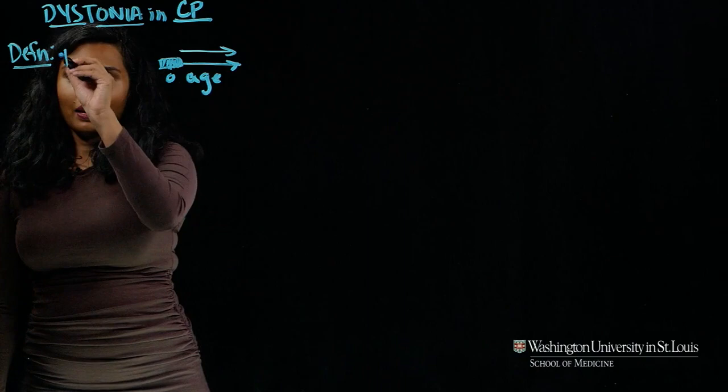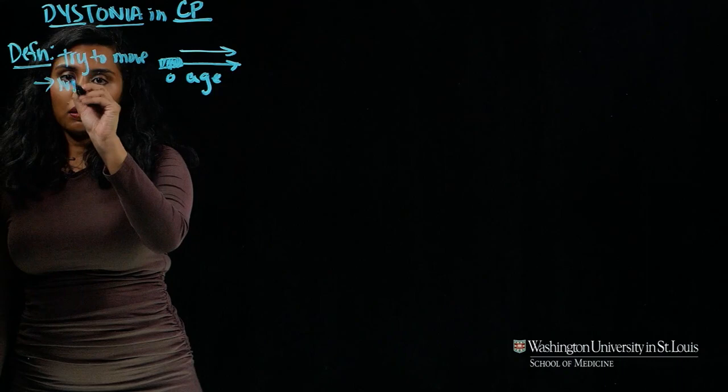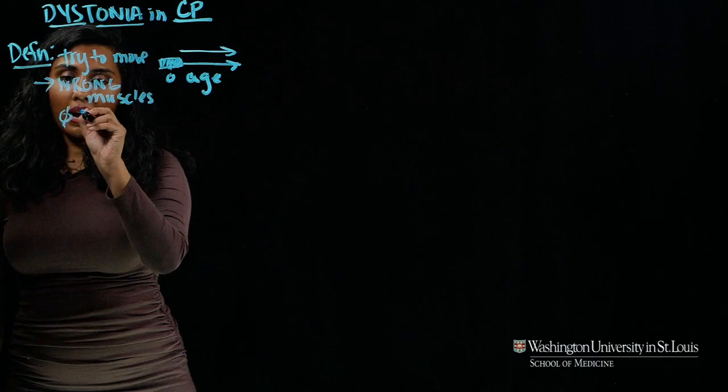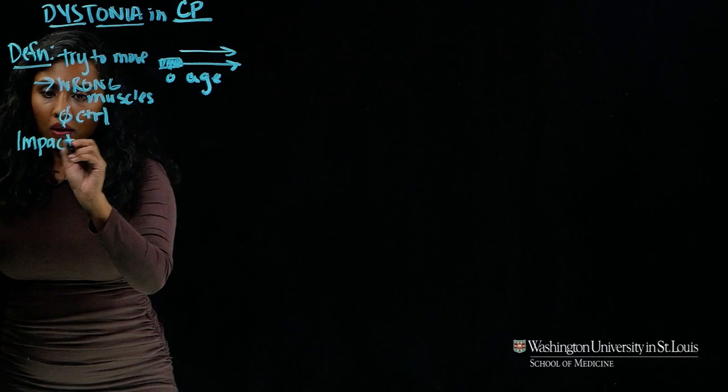And what that means is that when you try to move, the wrong muscles — the muscles that you don't want to contract — contract, and they do so out of your control. And you can imagine that the functional impact of this can be quite high, and dystonia is also quite painful.